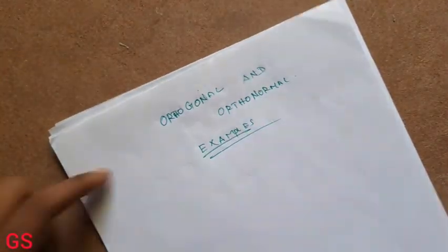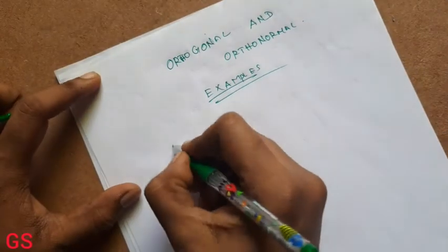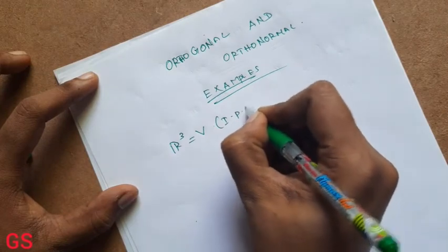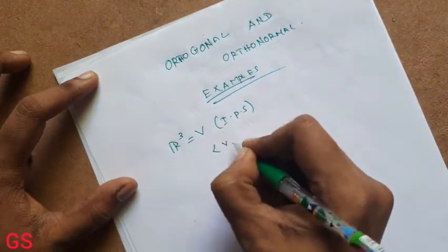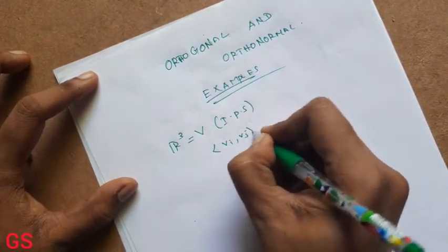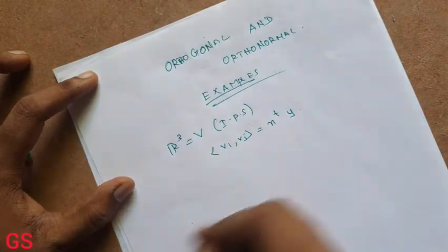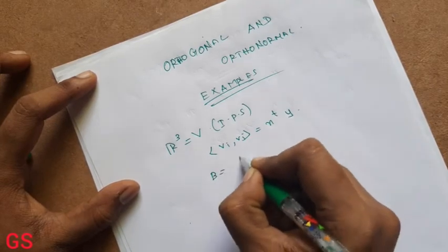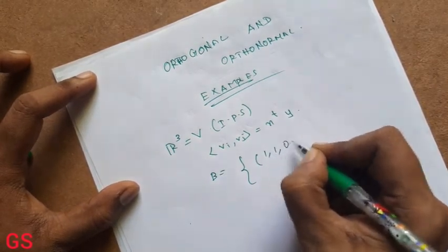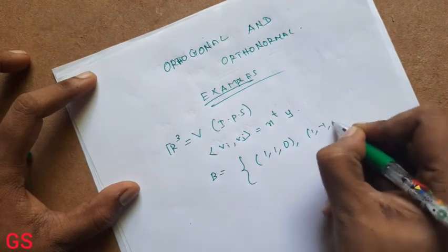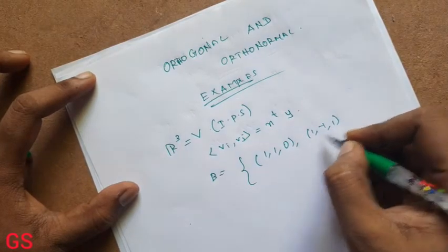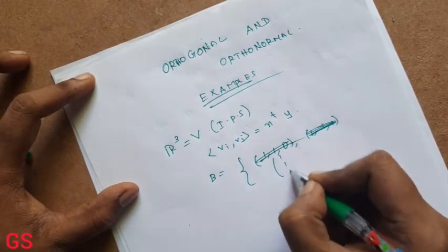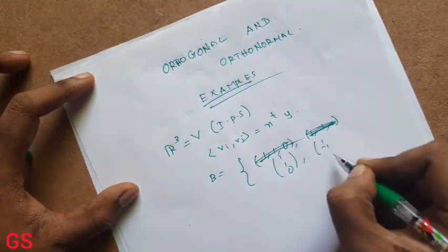Let's look at the example. R3 is the inner product space. So R3 is the inner product space — that is the inner product defined. So V_i, V_j is equal to X transpose Y. Let's look at the set B. Here is the element: (1, 1, 0), (1, -1, 1).